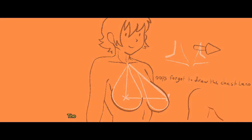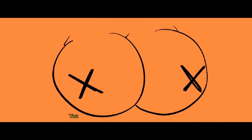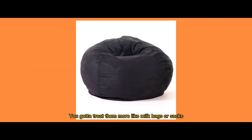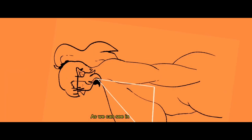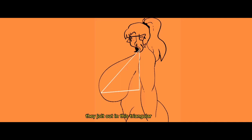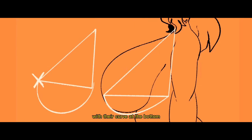The fourth mistake I recall is treating them like circles. You gotta treat them more like milk bags or sacks or as many say water balloons or teardrops. As we can see in this side view they jolt out in this triangular shape with the curve at the bottom similar to a teardrop and this advice can massively improve the way you draw them. Let them droop.